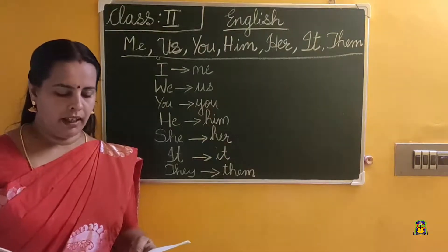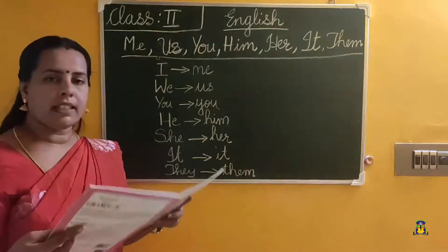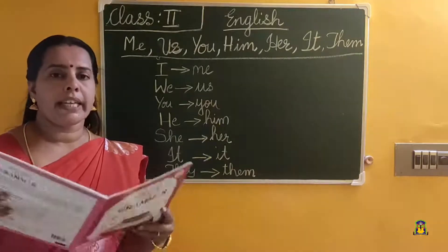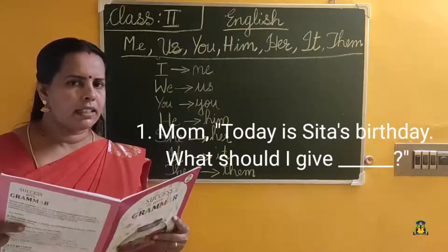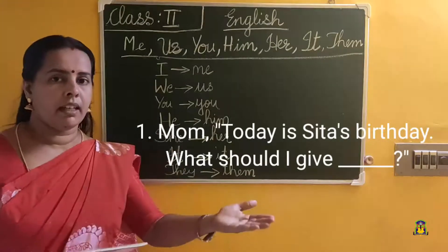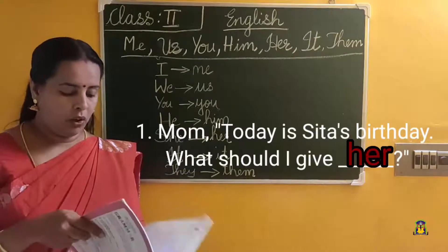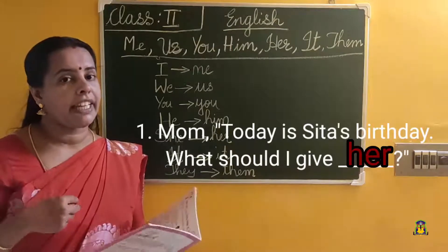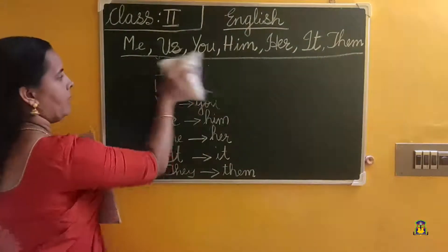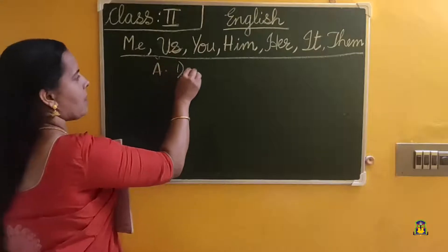Fill in the blanks with me, us, you, him, her, it, them — all these object pronouns. First sentence: Mom, today is Sita's birthday. What should I give dash? Sita is a girl, so we should give her. Mom, today is Sita's birthday. What should I give her? That is the answer. First answer is her.